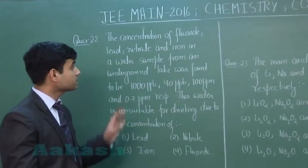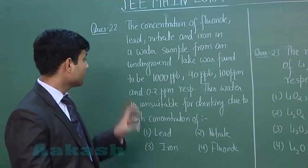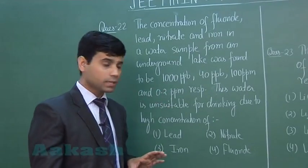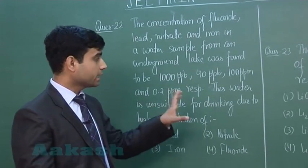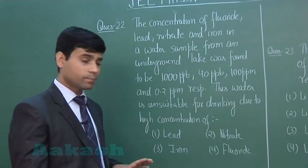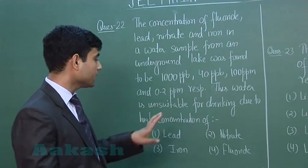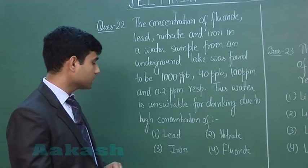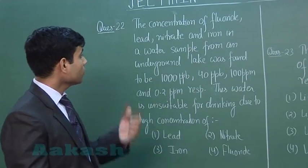This is the next question. The concentration of fluoride, lead, nitrate, and iron in a water sample from an underground lake was found to be 1000 ppb, 40 ppb (ppb stands for parts per billion), 100 ppm (parts per million), and 0.2 ppm respectively. This water is unsuitable for drinking due to high concentrations of: first option lead, second option nitrate, third option iron, fourth option fluoride.